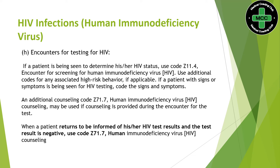For encounter for HIV testing — this is like screening, where the patient is seen to determine their HIV status. We code Z11.4 for the screening encounter. An additional code Z71.7 is used for counseling. For example, if a patient comes to the clinic for screening and upon completion the provider provides counseling, we assign Z71.7 additionally.